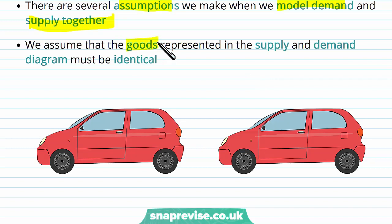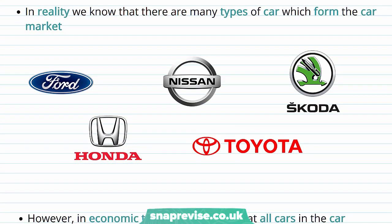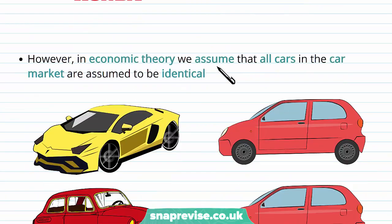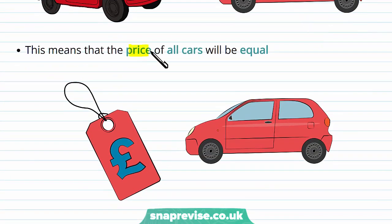So let's start off with our first assumption, which is that we assume that the goods represented in the supply and demand diagram must be identical. So when we're talking about the supply and demand for a good, these goods are the same. Just in reflection, we know that in reality there are many types of cars which formulate the car market. However, in economic theory, we assume that all cars in the car market are identical, and therefore the price of all the cars will be equal as well.